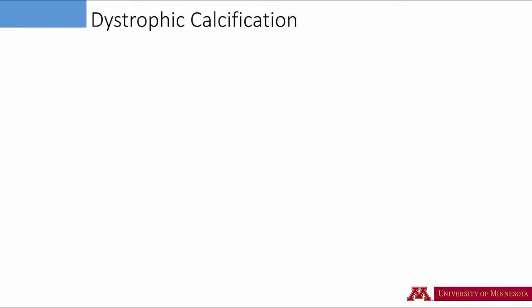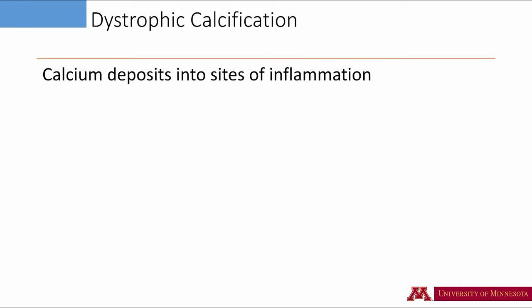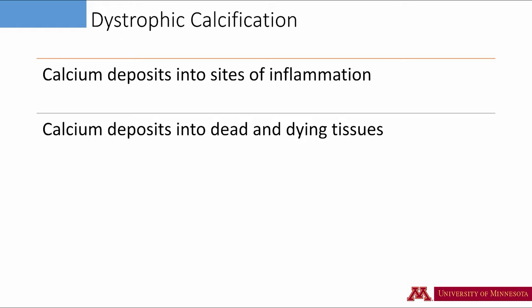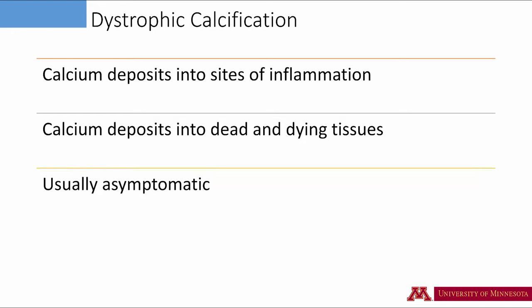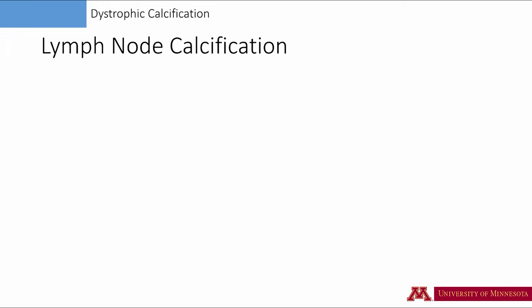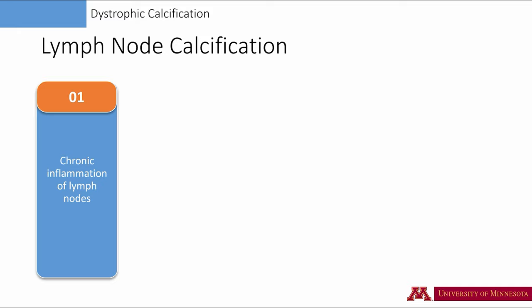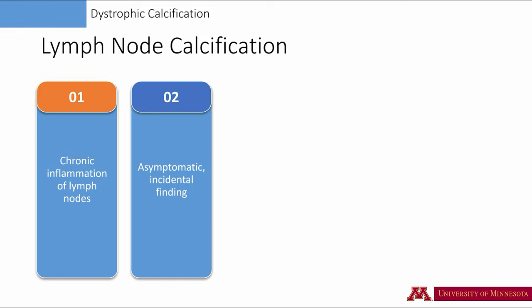Let's start with dystrophic calcifications. These are calcium deposits into sites of inflammation or into sites of dead or dying tissues. Frequently, we will see such calcifications in areas that had inflammations many years ago. Therefore, during your clinical encounter, these patients may be asymptomatic. The first condition that we learn is the calcification of the lymph nodes. Since this is a dystrophic calcification, we understand that these calcifications are results of chronic inflammation, and the patient most likely is currently asymptomatic.